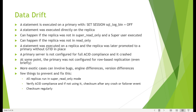A statement executed on a replica that was later promoted to a primary without GTID in place - there were some errant GTIDs on the replica side. Any transaction which is not on the master side is called an errant GTID. Once you promote a replica which has an errant GTID, the master will ask for those GTIDs and the replication will break.